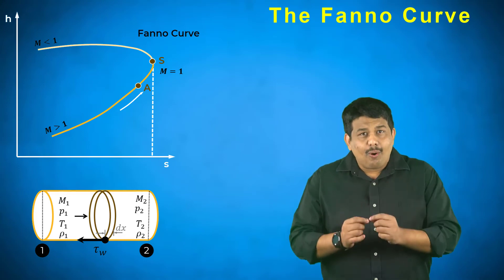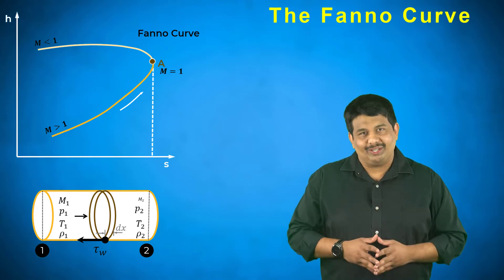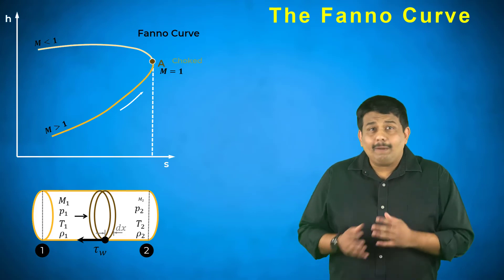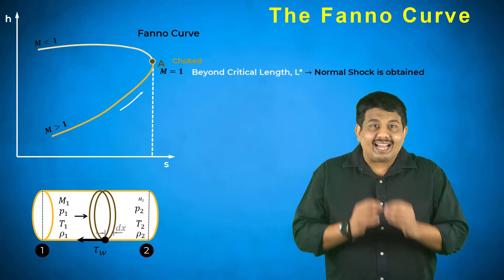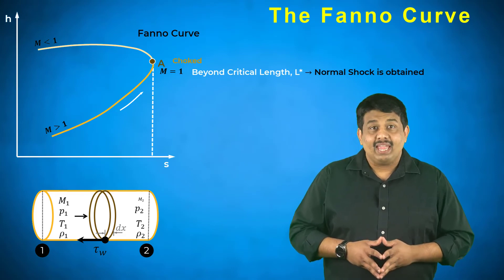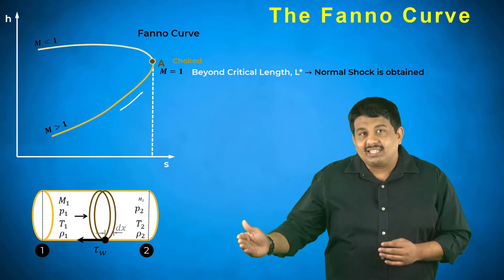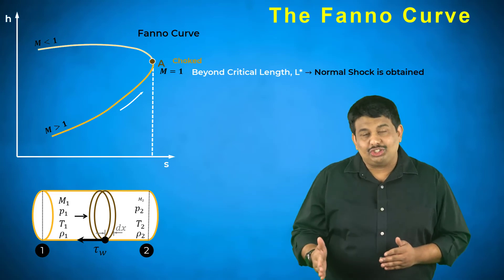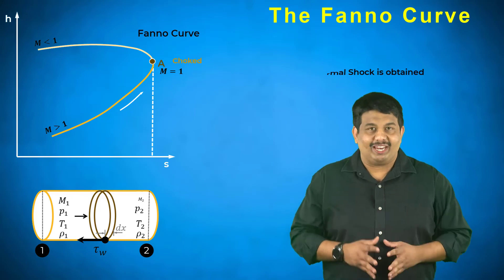At a critical pipe length L star, the flow in region B becomes sonic and is considered choked. It is not possible to increase the length any further without drastically changing the upstream conditions. Any further increase in the length of the pipe beyond this critical value produces a normal shock and the upstream flow conditions becomes subsonic.